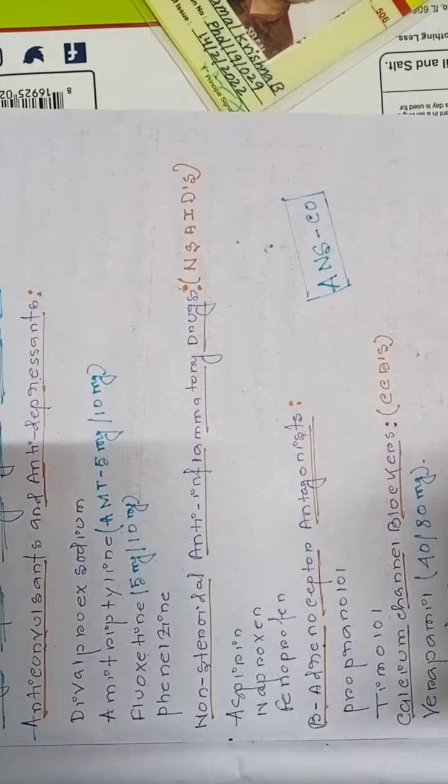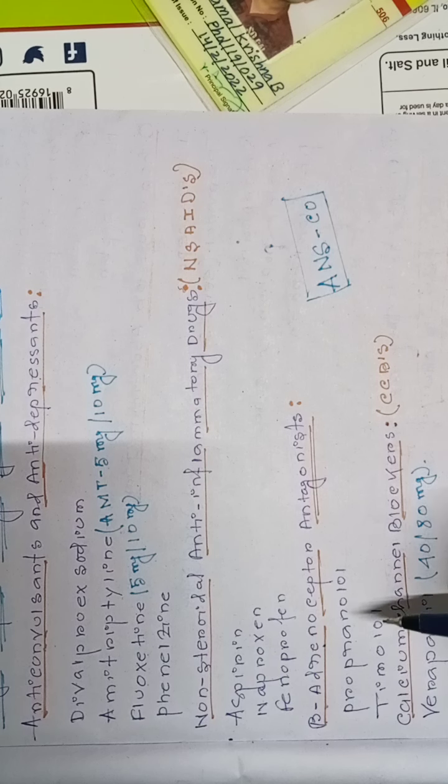In that, beta blockers like propranolol and timolol, these are used for prophylactic treatment for migraine headache.